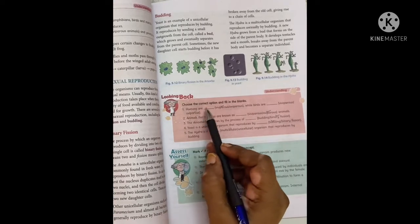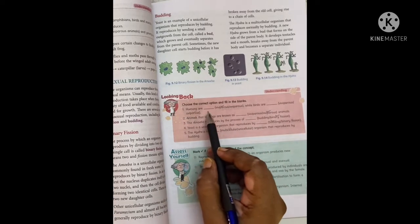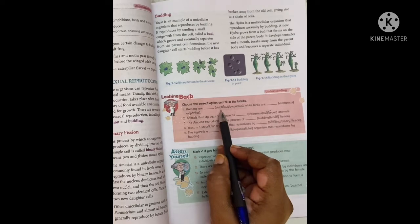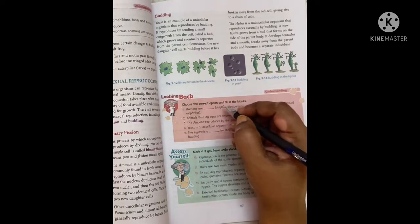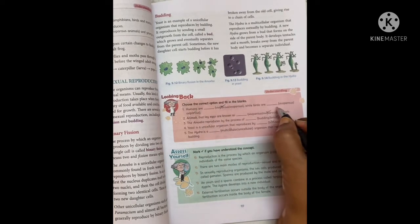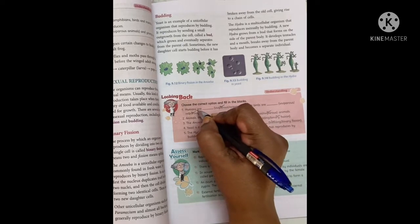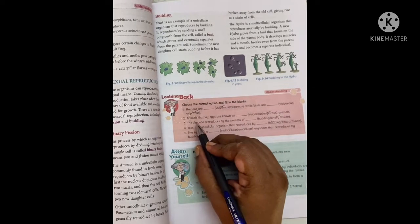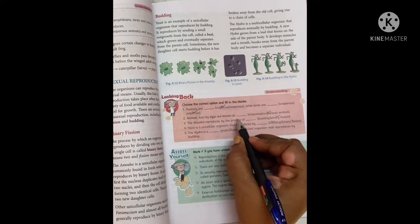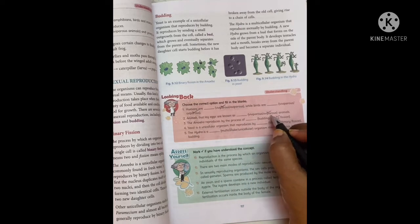Choose the correct option and fill in the blanks. Humans are viviparous and birds are oviparous. Animals that lay eggs are known as oviparous animals.